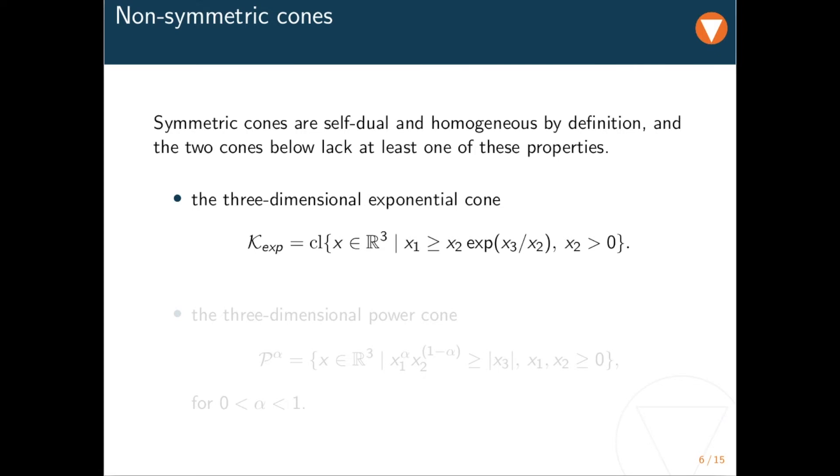The power cone is actually a parametric family of cones, as the exponent α represents a degree of freedom. For α equal to one-half, it has some similarity with the rotated quadratic cone. We define it here in three dimensions, although it is straightforward to extend it to any dimension by replacing the absolute value on the right-hand side by the Euclidean norm of the last n minus two entries.